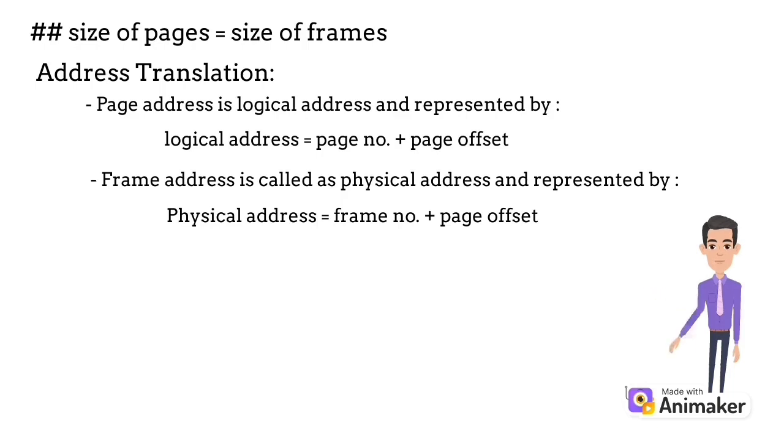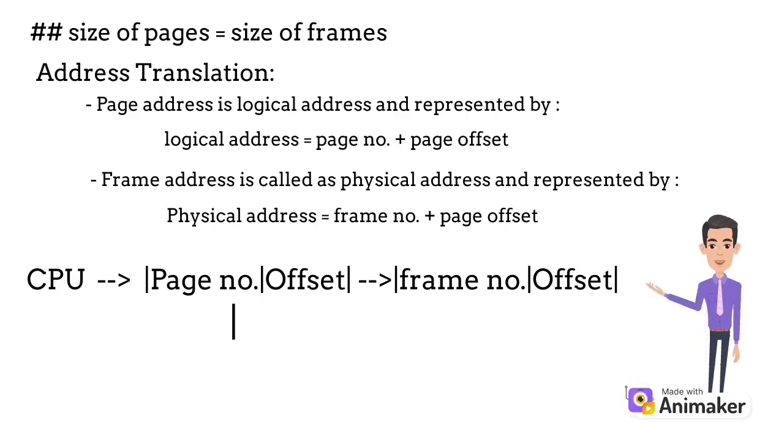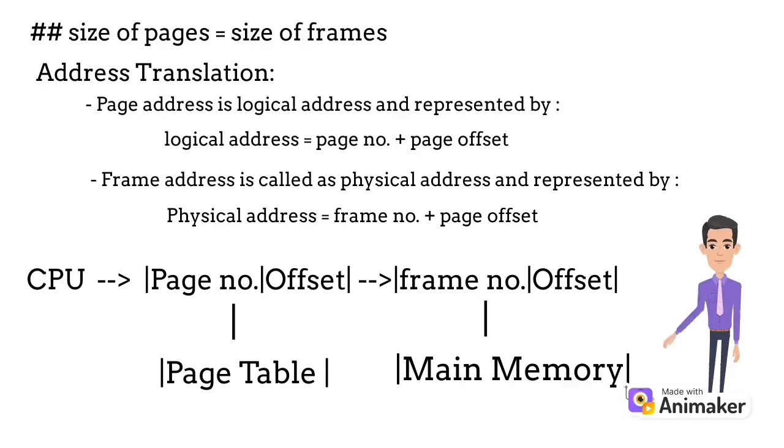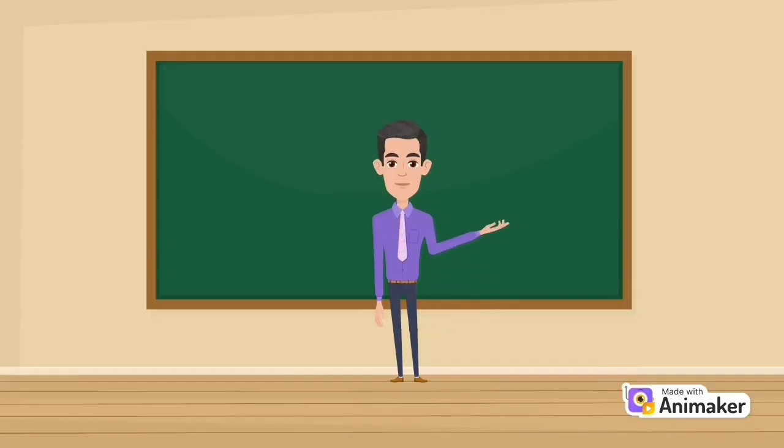Now we see how paging actually works. First, the CPU generates the query which goes to page number and offset number, which is further connected to the page table that holds the page details. Then it moves to frame number and offset number, which is connected to main memory where data is stored. Now we take one example and see how it works step by step.